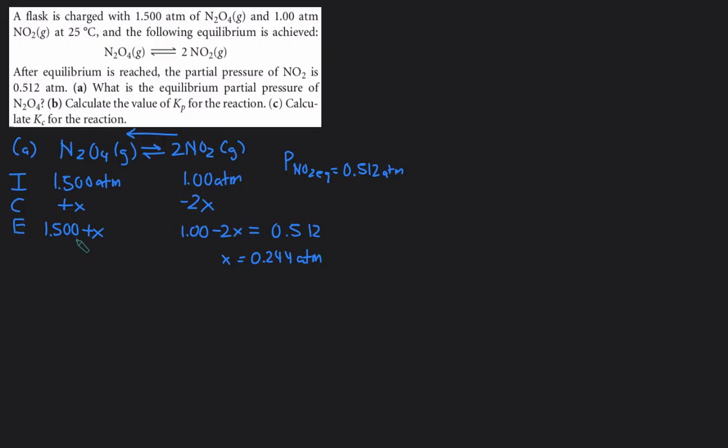Then we take x and plug it back into the E line to get the equilibrium pressure of N2O4. So the equilibrium pressure of N2O4 is just 1.5 plus x, and that's 1.5 plus 0.244. And that would give us 1.744 atm.